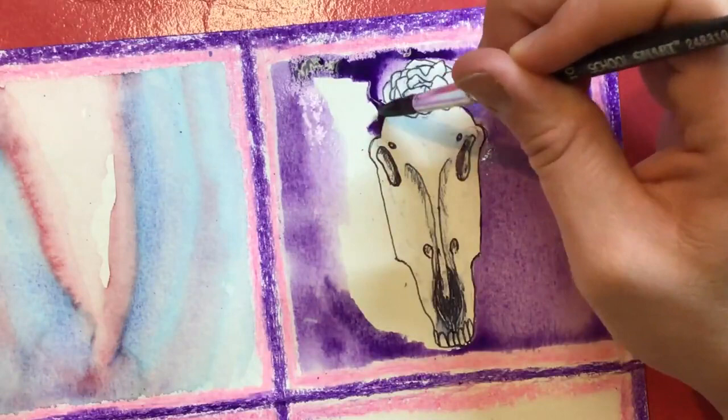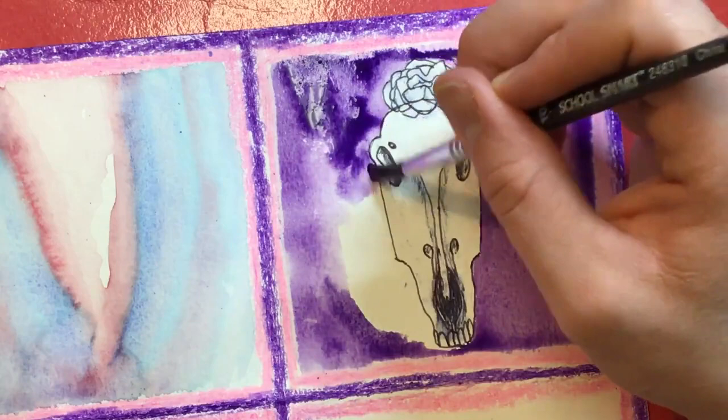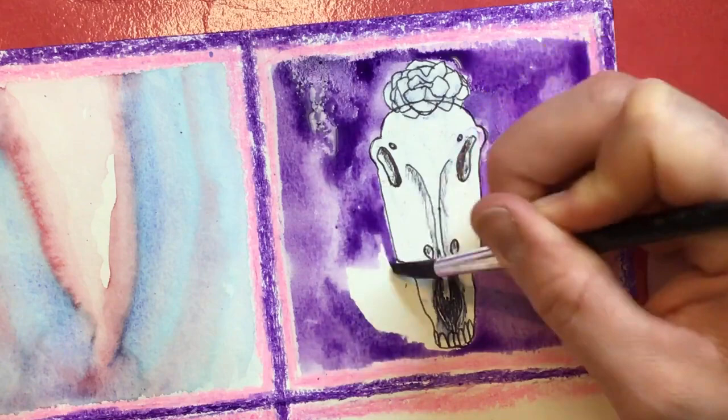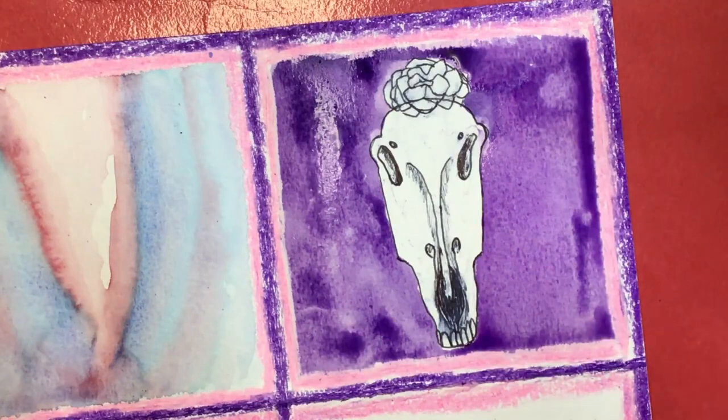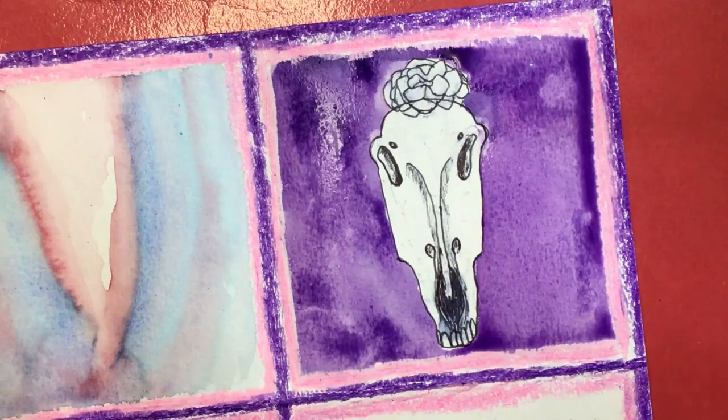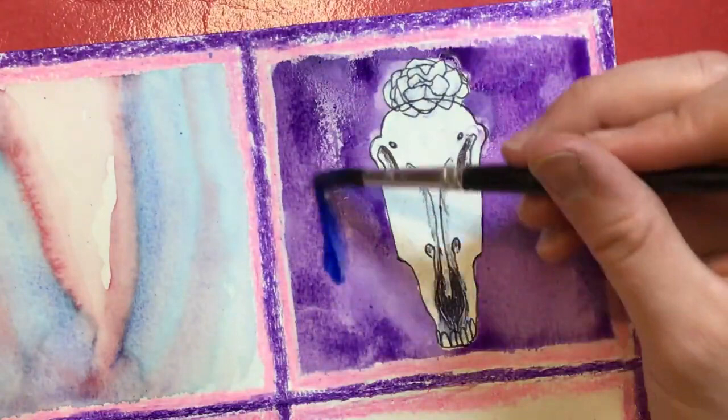I think purple in my opinion was a great choice for this one. Maybe you're doing yours blue, maybe I don't know. It'll be really fun to see all the different ways that you choose to paint your background for your horse. And I love that there's a flower on top of the skull's head. It really shows appreciation for the beauty of the animal even after the fact it has died. That is so cool.